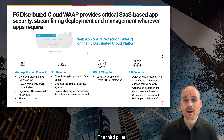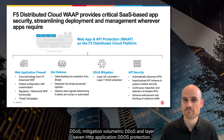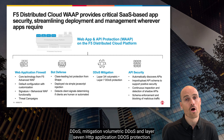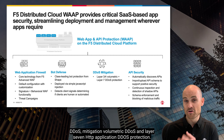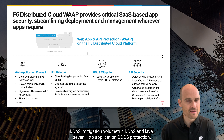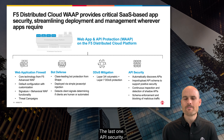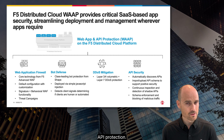The third pillar is DDoS mitigation — volumetric DDoS and layer seven HTTP application DDoS protection. The last pillar is API security and API protection.